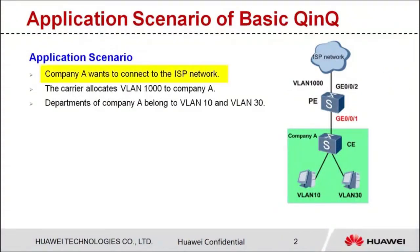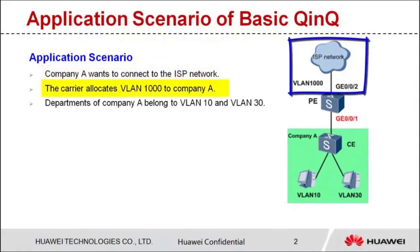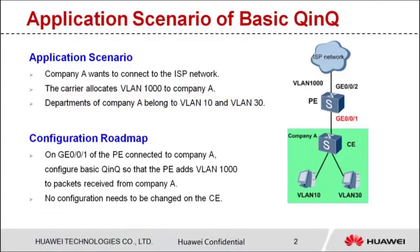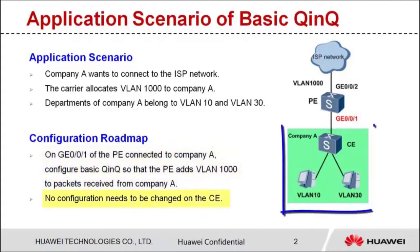As shown in the figure, Company A wants to connect to the ISP network. The carrier allocates VLAN 1000 to Company A, and departments of Company A belong to VLAN 10 and VLAN 30. On GE0/0/1 of the PE connected to Company A, configure basic QNQ so that the PE adds VLAN 1000 to packets received from Company A. There is no need to change the networking and configuration of Company A.